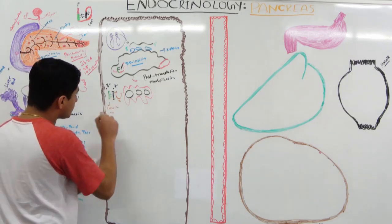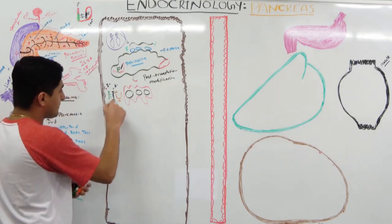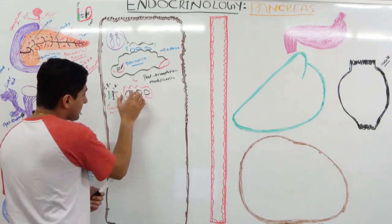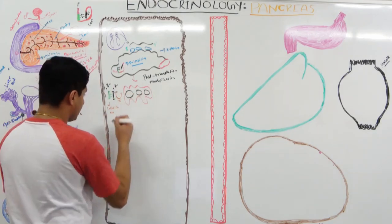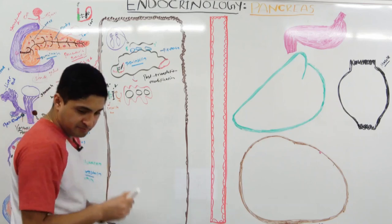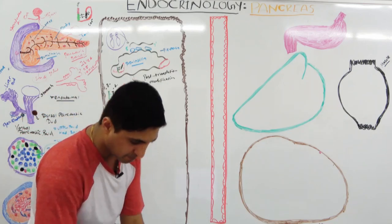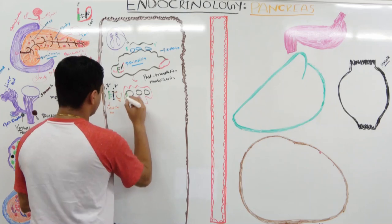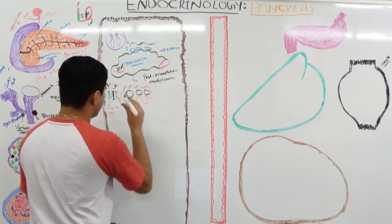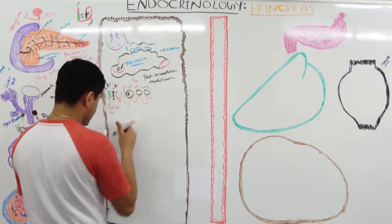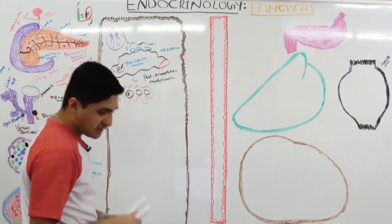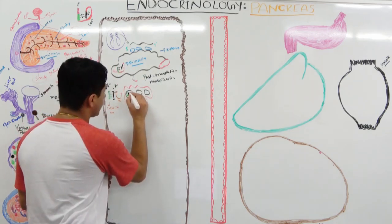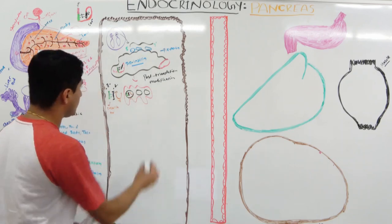This insulin is the biologically active form. It is stored in granules alongside the C peptide. Whenever there's a high level of glucose, secretion of insulin takes place, and C peptide is released at the same time.